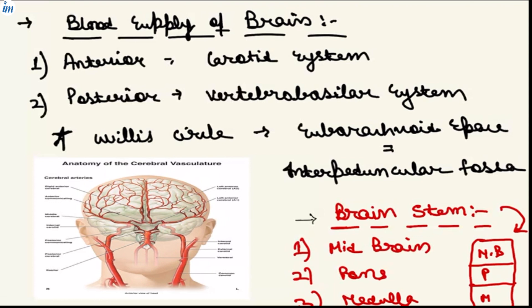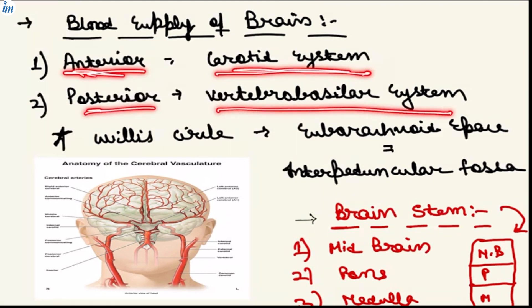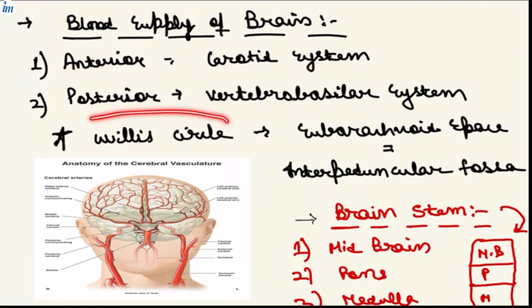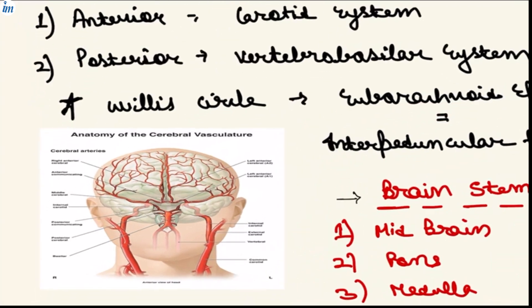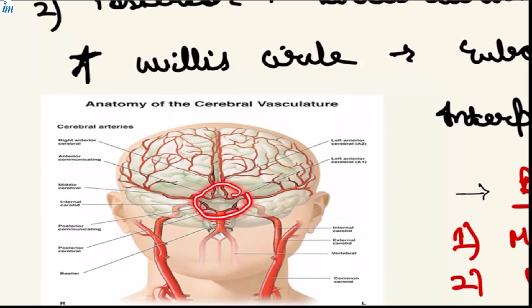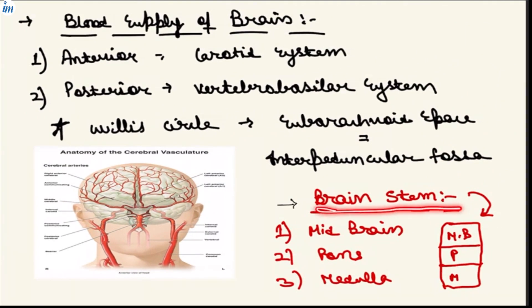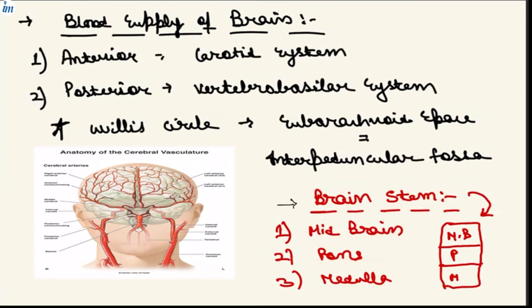In the blood supply of the brain, anteriorly we have the carotid system and posteriorly we have the vertebrobasilar system. The blood supply is delivered via the Circle of Willis, which is present in the subarachnoid space at the interpeduncular fossa. The brainstem is comprised of midbrain, pons, and medulla.